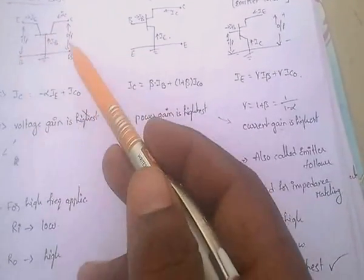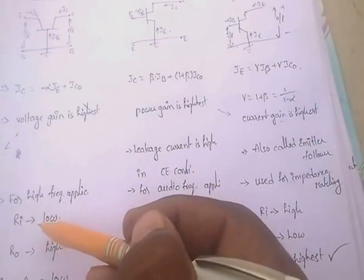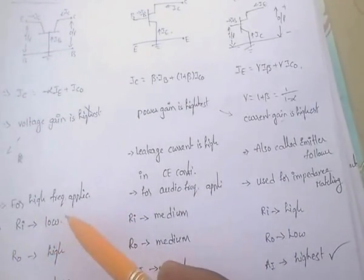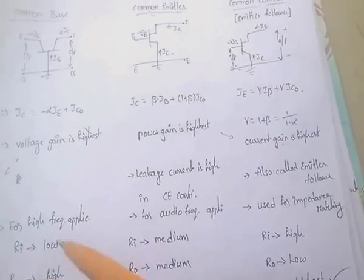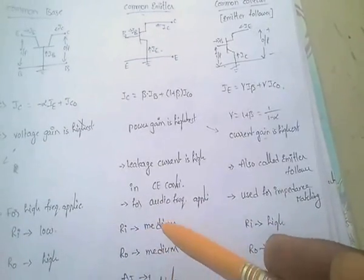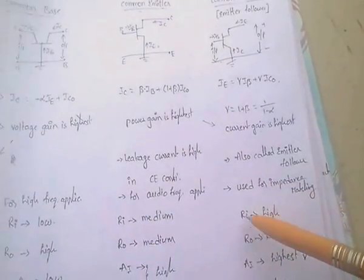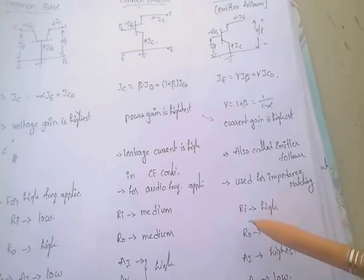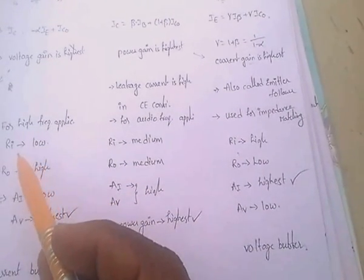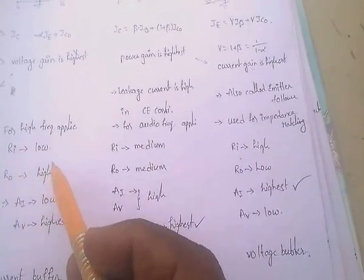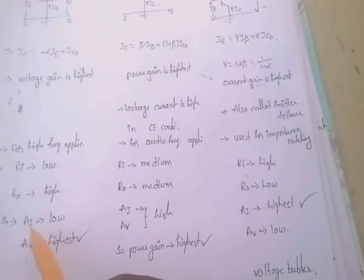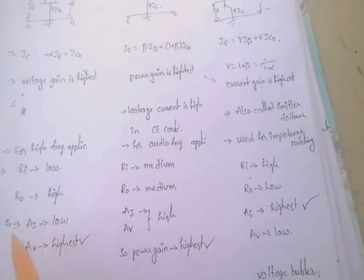In common base, input impedance is low and output impedance is high. In common emitter, both input and output resistance are medium. In common collector, input impedance is high and output impedance is low. In common base, voltage gain is highest and current gain is lowest.